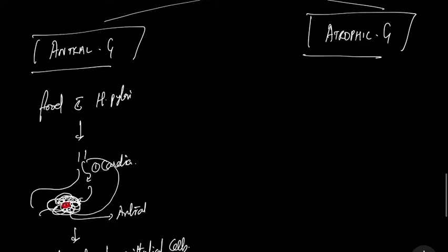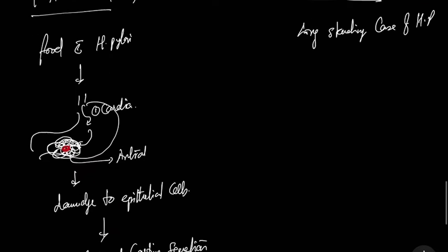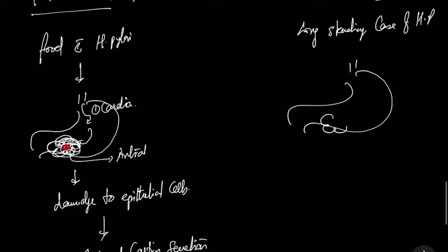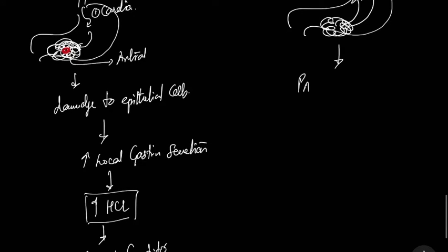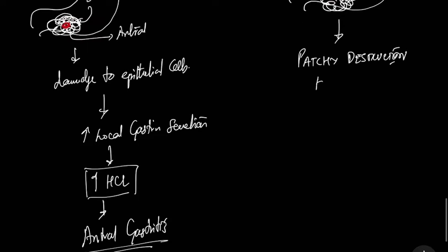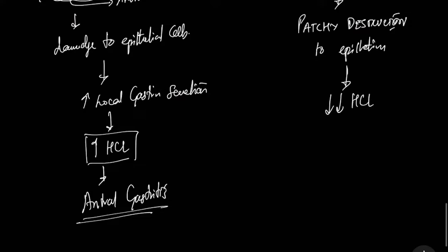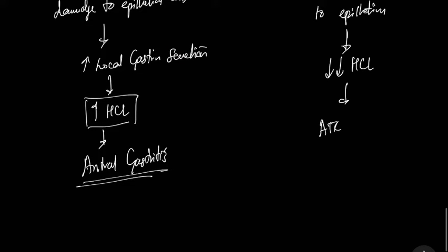Now coming to the second type, atrophic gastritis. In a long-standing case of H. pylori, the infection starts spreading from the antral region to the body and fundus. This leads to patchy destruction of the epithelium, which eventually leads to a decrease in HCl, resulting in atrophic gastritis.